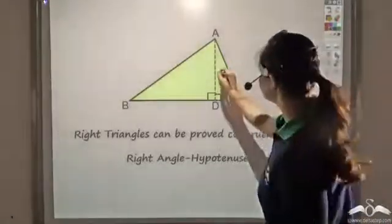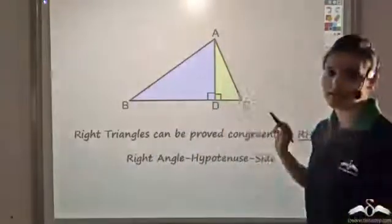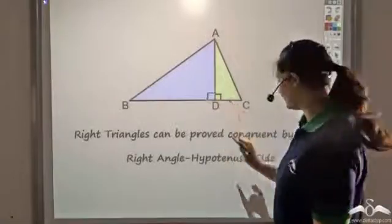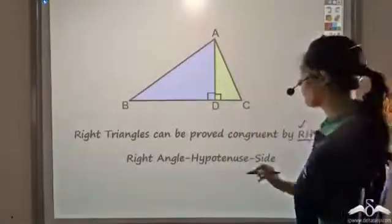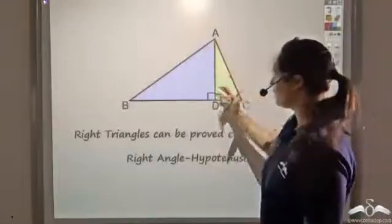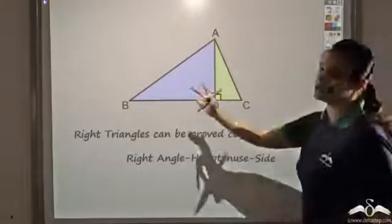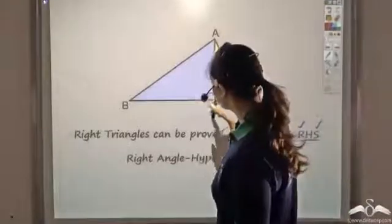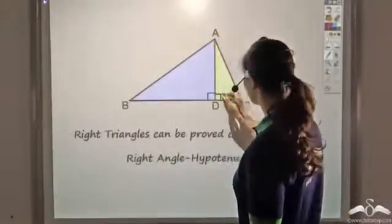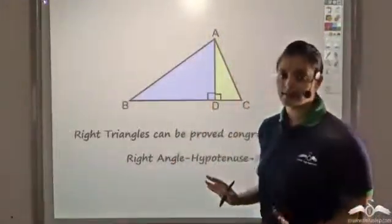Let us make the two right triangles. In these two right triangles, I have the right angle — that is done. I also have a common side; they both share side AD, so AD is equal to AD. All I need is that the hypotenuse should be the same. The hypotenuse in this triangle is opposite to the right angle, which is AB, and here the hypotenuse is AC. So if AB is equal to AC, then these two right triangles will be congruent.